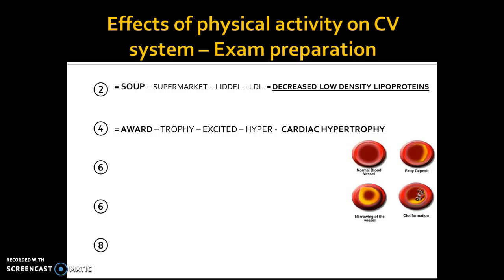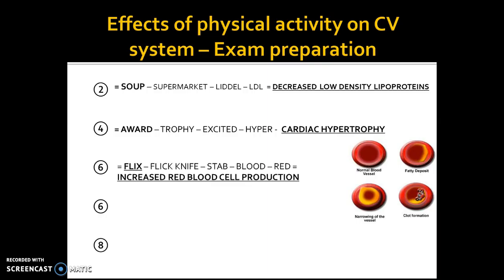Make sure you can link it to coronary heart disease. Number 6 is basically looking at 'anorexic.' When you think of anorexic you think of thin — thin in terms of the blood, so blood will thin. You will not get a mark just for saying 'blood thinning,' so you must use the term decreased blood viscosity, meaning reduced resistance to flow. There's a reduced resistance to blood flowing around the cardiovascular system. This prevents the onset of blood clots and therefore prevents a heart attack, myocardial infarction, or angina.